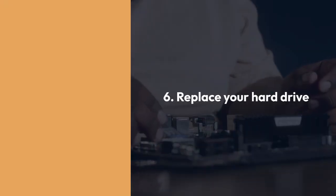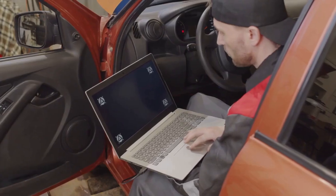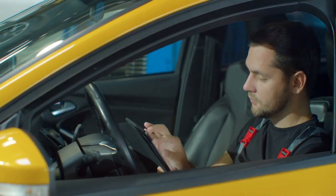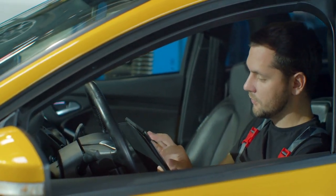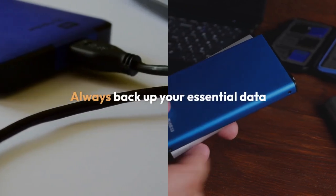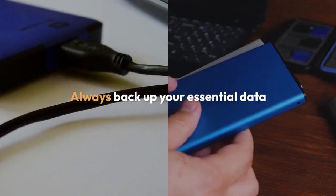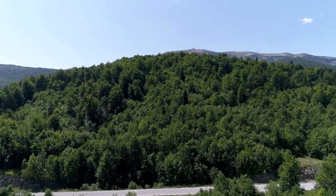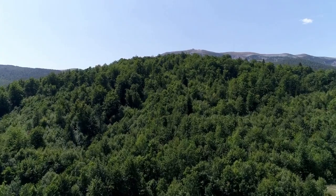Step 6: Replace your hard drive. If the problem is definitively with the hard drive itself, as indicated by diagnostic tests or persistent errors, replacing it is often the best solution. Ensure you back up your essential data before doing so. Consider switching to a solid state drive (SSD) for faster speeds and improved reliability, although this is a separate purchase. Once replaced, reinstall the operating system and your applications.